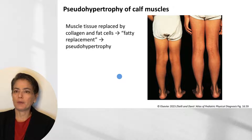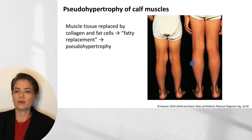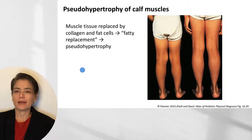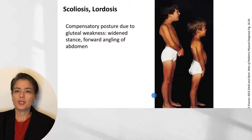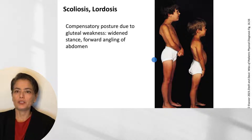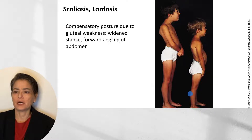This image shows pseudohypertrophy of the calf muscles with some atrophy in the thighs. These are two brothers, both with Duchenne muscular dystrophy; the pseudohypertrophy is more pronounced in the older boy, due to muscle tissue replacement by collagen and fat cells — sometimes referred to as fatty replacement. A second image of the same brothers shows the compensatory posture due to gluteal weakness, with a widened stance, forward angling of the abdomen, and appreciable lumbar lordosis, with effects more pronounced in the older boy.